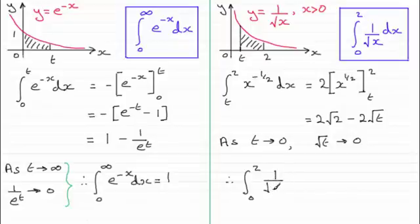So, we now, then, have our final answer. That is the integral from 0 to 2 of 1 over root x, with respect to x. Well, that's just going to be 2 root 2, because that second term here tends to 0. So, we've got a value for this integral, and so, this integral is said to be convergent.